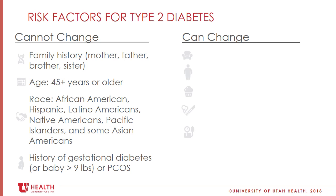Let's review risk factors for type 2 diabetes. There are two columns. The left column includes risk factors that we cannot change, and the right column includes risk factors that we can change — meaning that if we implement small steps, we can decrease our risk for type 2 diabetes. Starting with the left column: the first item is family history. If we have a first-degree relative — mother, father, brother, or sister — who has type 2 diabetes, then we are at a higher risk.